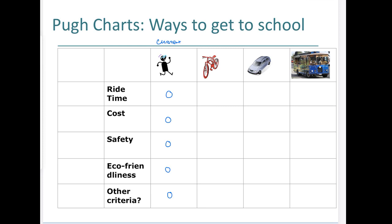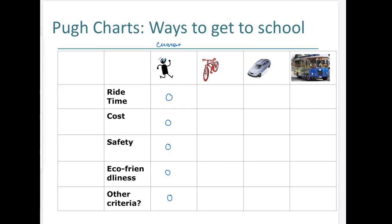One of the ways you might think about getting to school is riding a bike. For ride time, it would definitely be faster, so we'd say plus one. For cost, it would cost more, so minus one. For safety, it's probably a little safer — I'll say it's about the same. Eco-friendliness is about the same as walking.